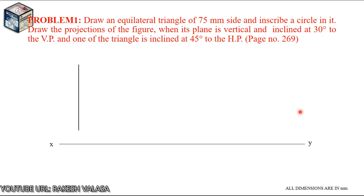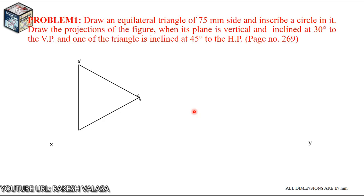Take the engineering compass and set the measurement to 75mm. From one endpoint draw an arc, then from the other endpoint draw an arc to cut the previous arc — that intersection point is C. Join the endpoint and the intersecting point. Give the lettering in clockwise direction: A dash, B dash, and C dash. This is the equilateral triangle.